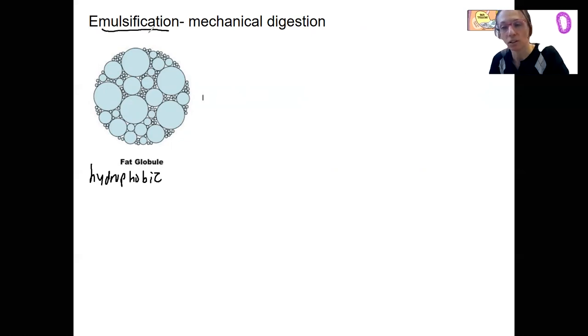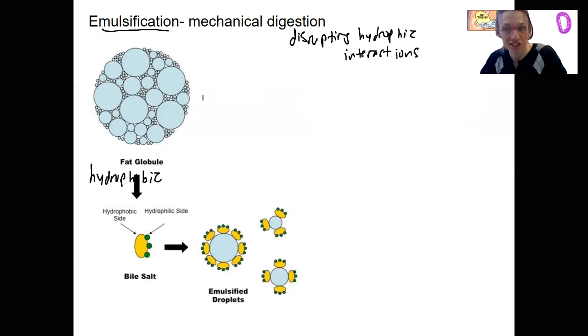It's actually a type of mechanical digestion where we're disrupting those hydrophobic interactions. How do you disrupt hydrophobic interactions? If you have grease on your hands or oil on your hands, how do you disrupt those interactions? You use soap, detergent. That's basically what bile salts are. They have a hydrophobic and hydrophilic side. What's this called?